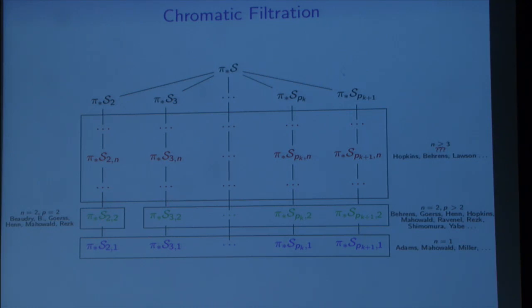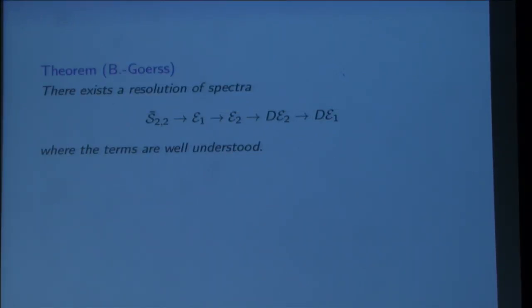Which kind of theorems do we have? Here is one recent one. What we did is we took this sphere—this is chromatic level 2, prime 2 sphere, actually there's a bar there, it's not quite a sphere but something very closely related to it—and we resolved it in terms of spectra that we really understand very well. We know everything about them. Furthermore, there is an ε₁, ε₂, and then there are the duals. There's various notions of duality in homotopy theory, so these are the duals with respect to certain duality statements. We know everything about these epsilons and we know everything about the maps, so we can actually say a lot about S₂₂.